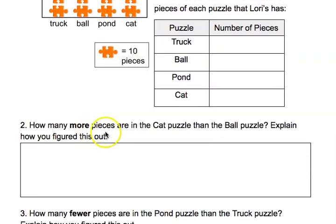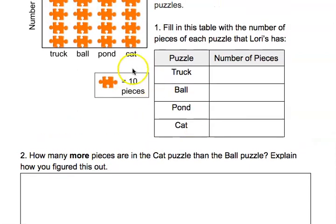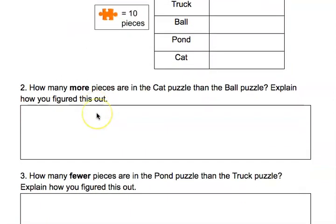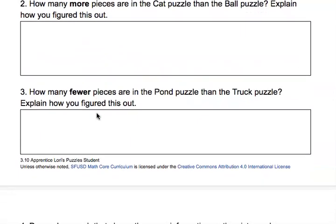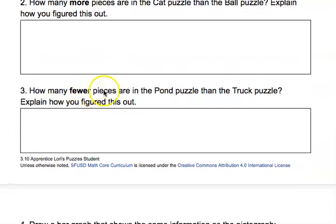How many more pieces are in the cat puzzle than the ball puzzle? Explain how you figured this out. So you're going to look at the cat up here and the ball — you can also just look straight to this table. How many fewer pieces are in the pond puzzle than the truck puzzle?